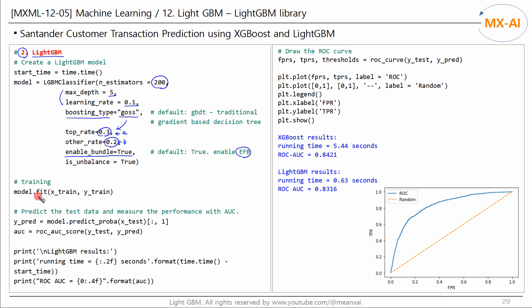Fit this model to the training data. And predict the test data and measure the AUC score. And check the results. The results are as follows. XGBoost took 5.44 seconds to run and the ROC AUC score is 0.8421. In the case of light GBM, it took 0.63 seconds to run and the ROC AUC score is 0.8316.